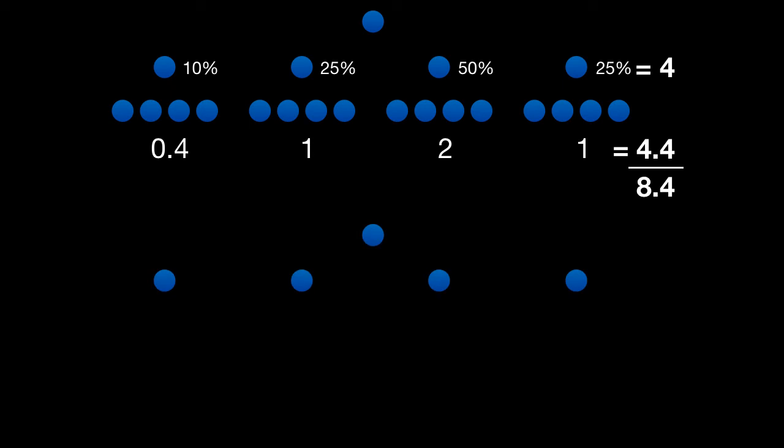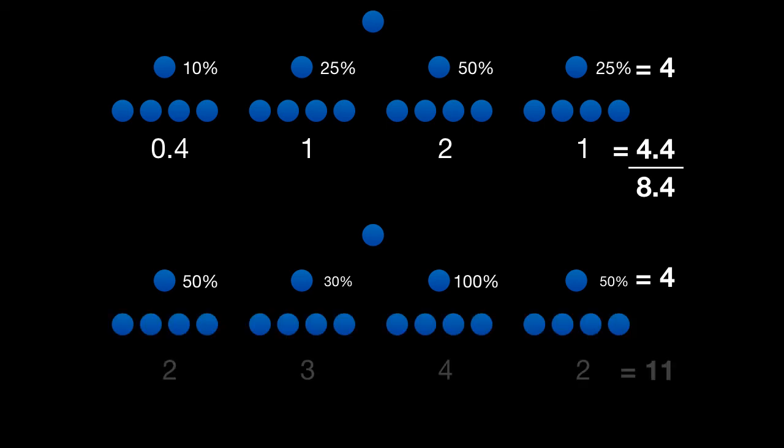This means that two different people with the same number of downstream followers, but a different level of authority or relevance to the audience, are going to have a different downstream reach.